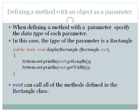Defining a method with an object as a parameter. When defining a method with a parameter, specify the data type of each parameter. In this case, the type of parameter is a rectangle. Rect can call all of the methods defined in the rectangle class.